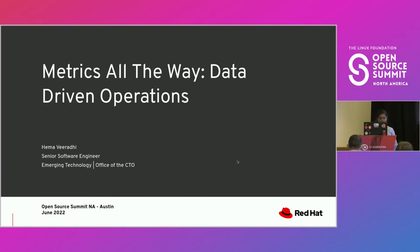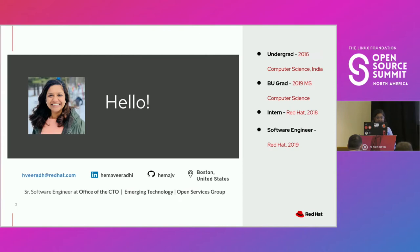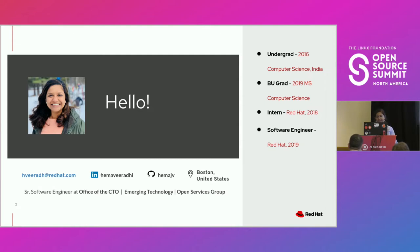Let me go ahead and introduce myself. I'm Hema Viradi and I work at the Emerging Technology Group, which is part of the office of the CTO at Red Hat. I work out of Boston in Massachusetts, originally from Bangalore, India. I came to do my master's here at Boston University, and post then I've been working as a software engineer at Red Hat, now part of the Emerging Technology Group.